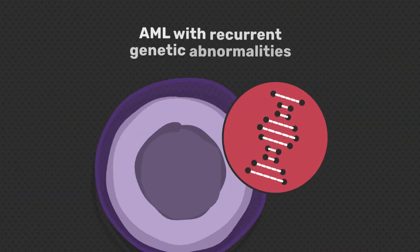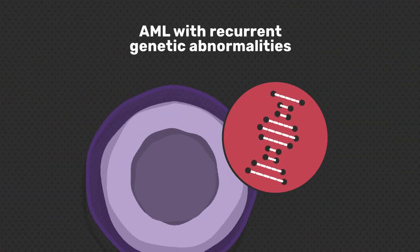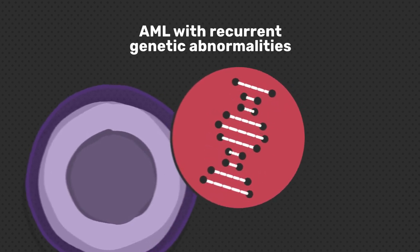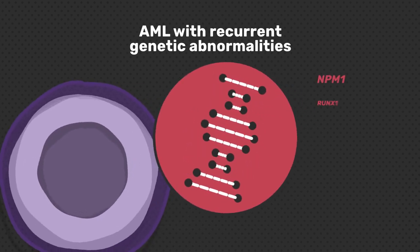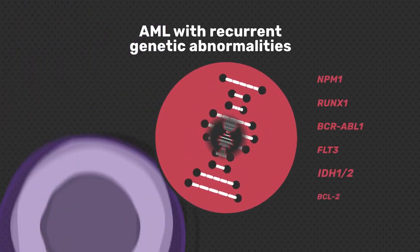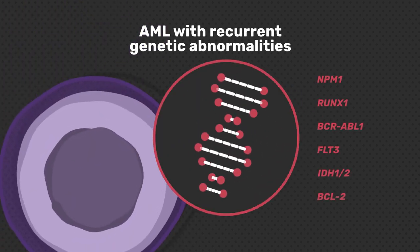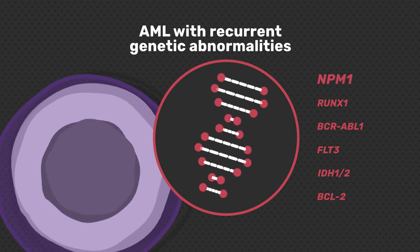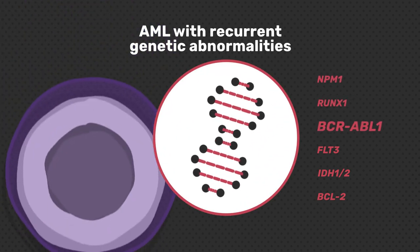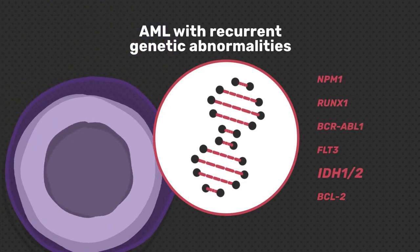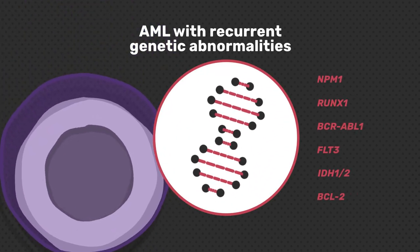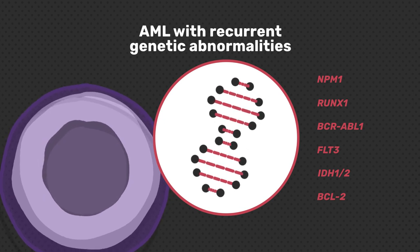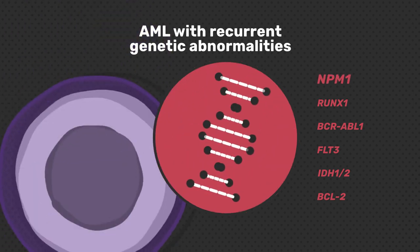AML with recurrent genetic abnormalities. There are many different types of AML with recurrent genetic abnormalities. These types are caused by changes in specific chromosomes or genes. Some of the genes which may be affected include the following.